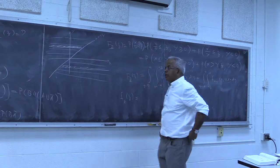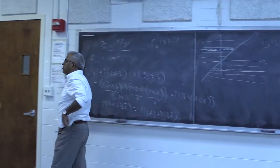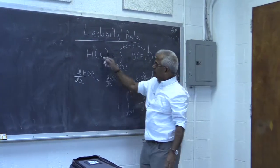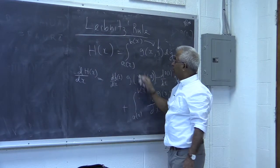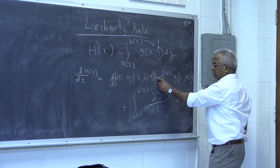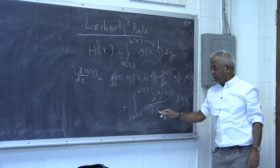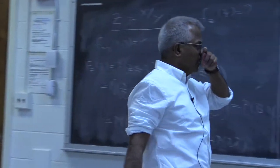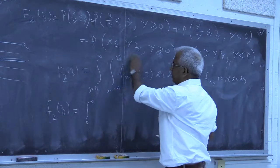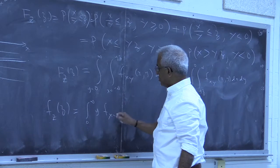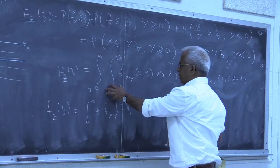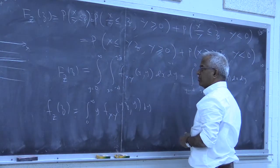We use the Leibniz rule. It states that if a function is an integral where the integrand as well as the limits are functions of the variable, then the derivative is: derivative of the top limit times the integrand evaluated at the top limit, minus the derivative of the bottom limit times the integrand evaluated at the bottom limit, plus the integral of the derivative of the integrand. Applying this, the outer integral stays the same, and the derivative of the top limit yz with respect to z is y, so we substitute yz. The derivative of the bottom limit (a constant) is zero, so no contribution there.